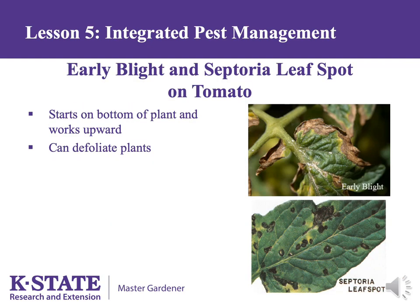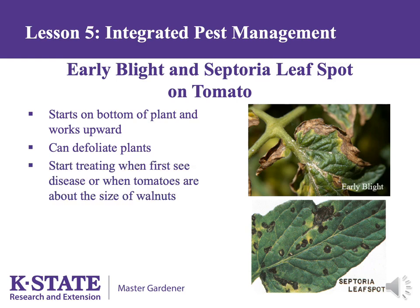Septoria leaf spot and early blight are common diseases on tomatoes that start at the bottom of the plant and work up, and in severe cases can defoliate plants. The best control is to rotate the tomato planting to different areas, but in small gardens this may not help. In such cases, a fungicide is needed — sprays must be started early, about the time tomatoes are the size of walnuts, as once the disease gets started it is very difficult to stop. Recommended products containing chlorothalonil, such as Daconil, OrthoGarden Disease Control, or Fertilome Broad Spectrum Fungicide, have a zero-day waiting period, meaning fruit can be harvested the same day after the spray has dried.